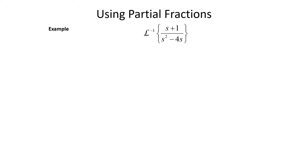For the inverse Laplace transform of (s+1)/(s²−4s), we factor the denominator to get (s+1)/(s(s−4)). We use those factors to create a sum of partial fractions: each factor in the denominator gives another term in the sum. Since both factors are linear, the numerators are just constants: A/s + B/(s−4).